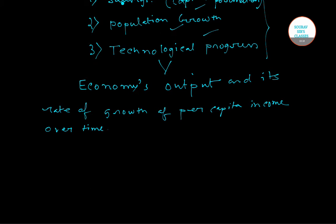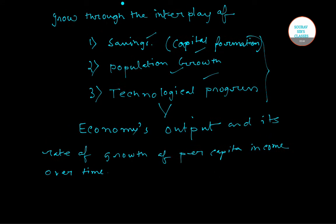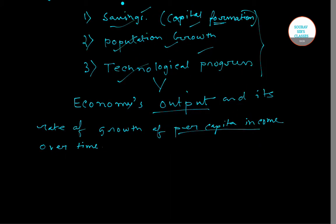So to summarize, the Solow model shows how a nation's output grows and how a nation's per capita income grows over time. It is basically determined by three factors: the first is savings or capital formation, the second is population growth, and the third is technological progress.